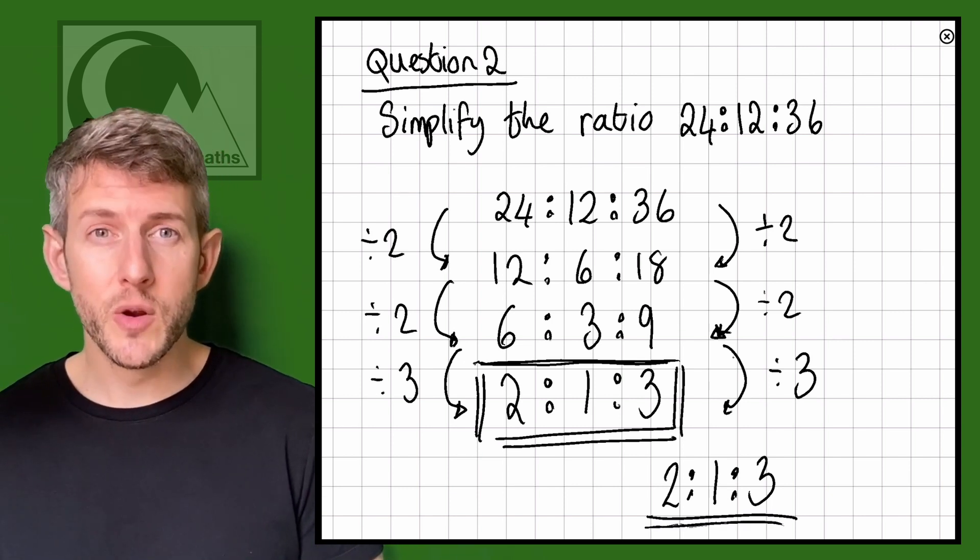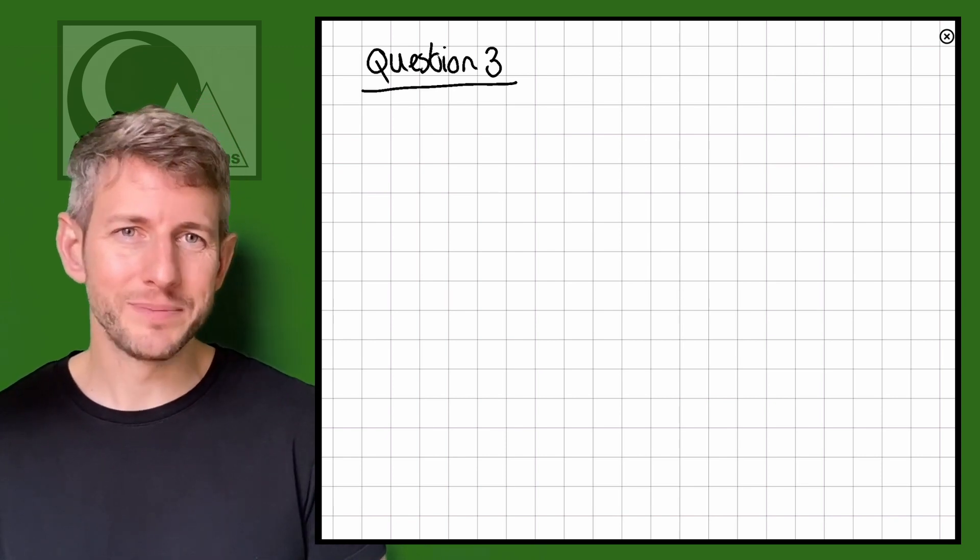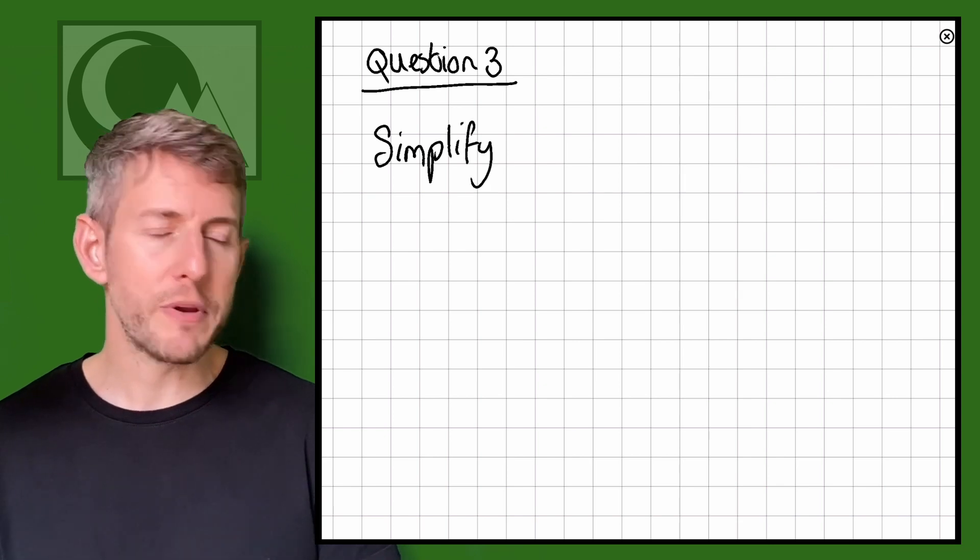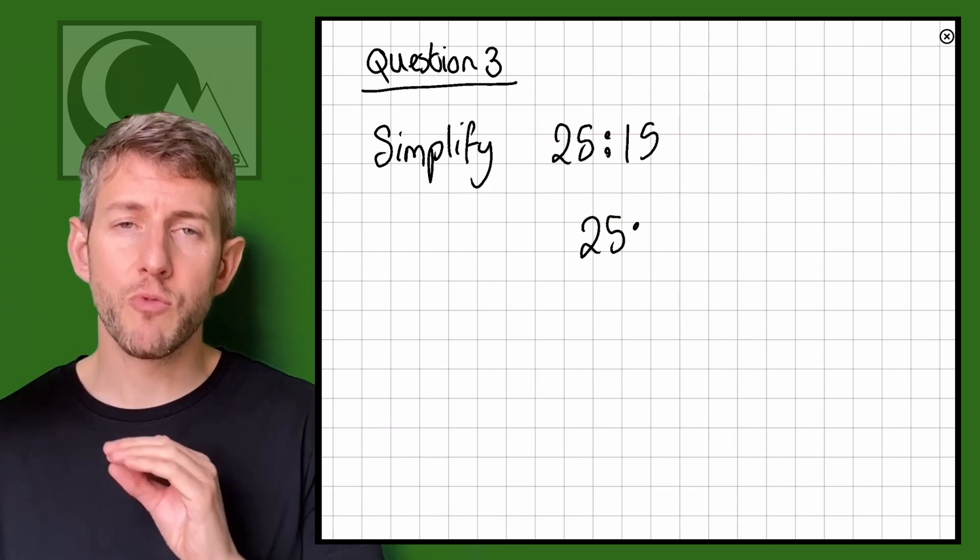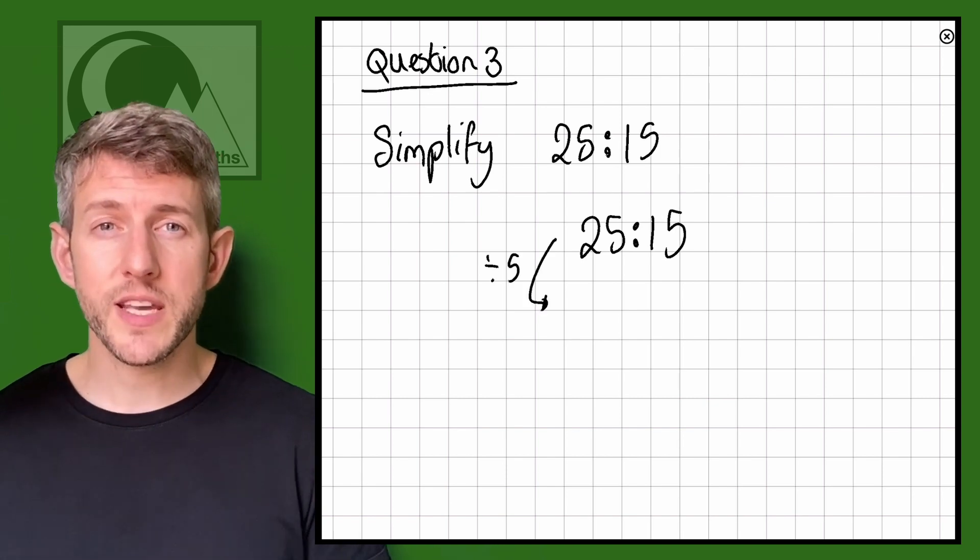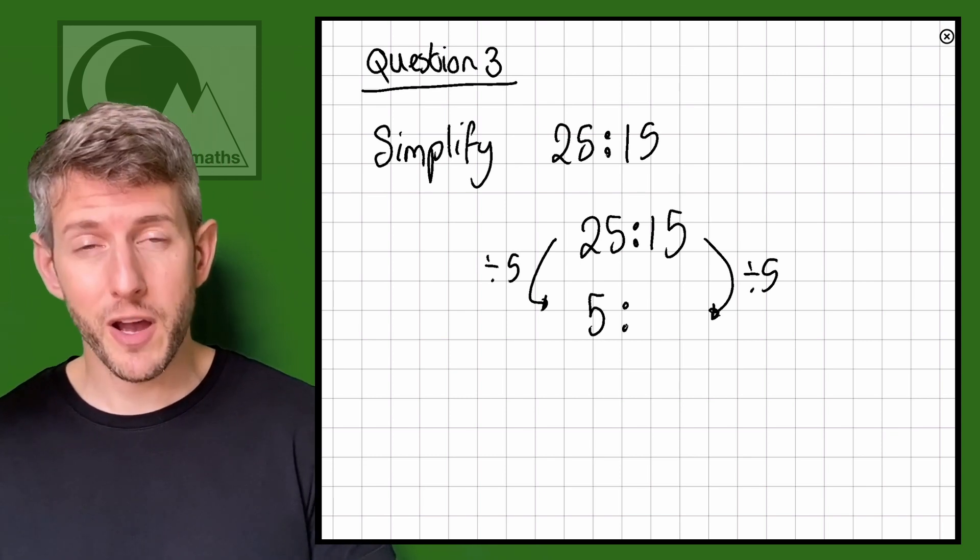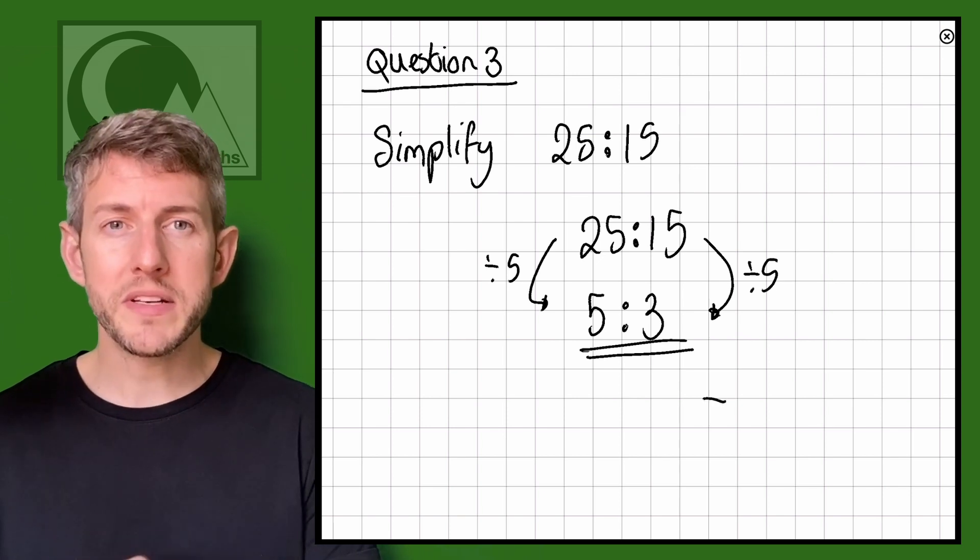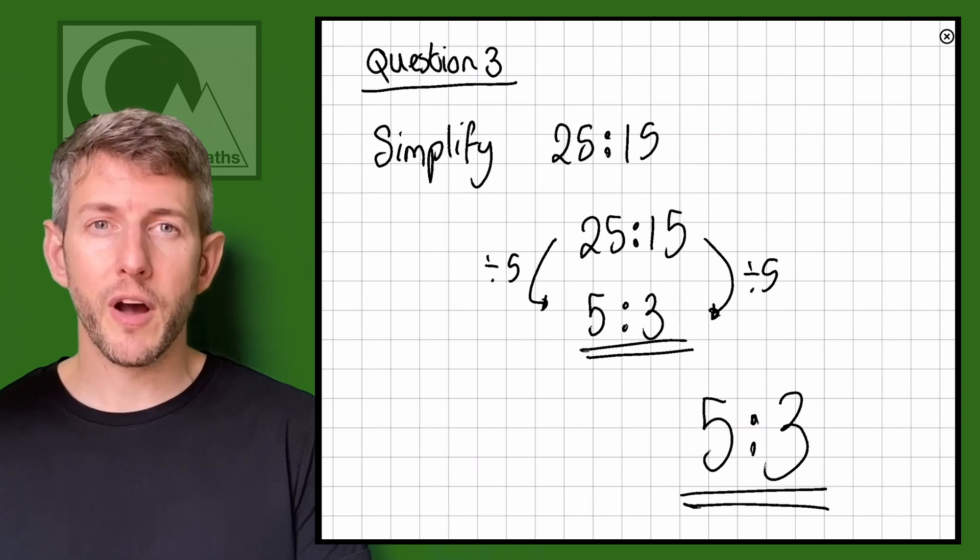Let's do one more example and then we can look at a scenario question. This next question says simplify 25 to 15. I can see they're both divisible by 5, so if I do 25 divided by 5 that gives me 5. If I do 15 divided by 5 that gives me 3. So 25 to 15 in its simplest form is going to be 5 to 3.